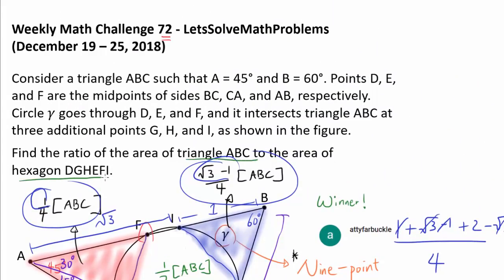So we know the area of triangle ABC to the area of hexagon, well, that's going to be 2 because ABC is twice as large.